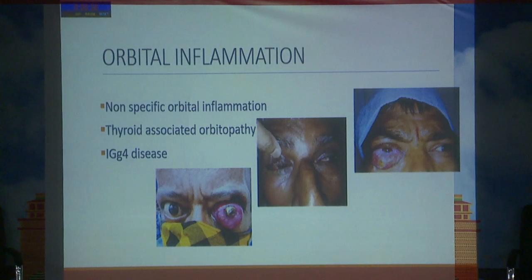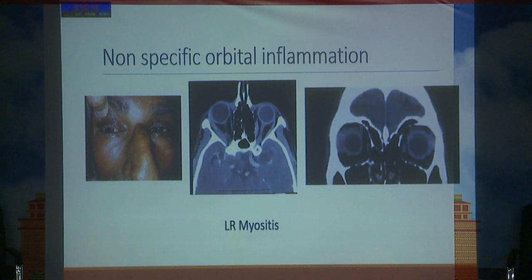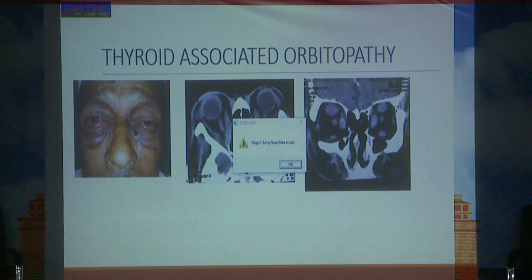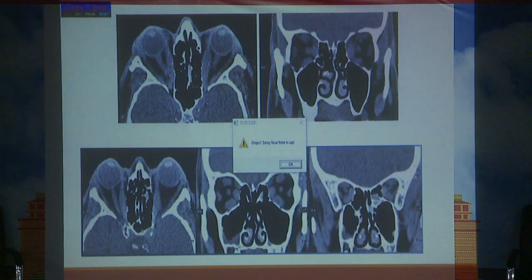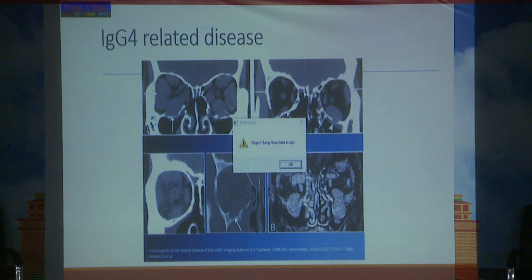In cases of orbital inflammation — non-specific orbital inflammation, thyroid-associated orbitopathy, or IgG4 disease — we go for CT scan. If we suspect a cavernous sinus lesion we request MRI. The CT scan in IgG4 disease shows lateral rectus enlargement, which is the myositic variety of NSOI. In thyroid-associated orbitopathy we can see extraocular muscle enlargement. In IgG4-related disease lateral rectus enlargement is seen, and a well-defined intraorbital enhancing lesion is most likely a cavernous hemangioma.